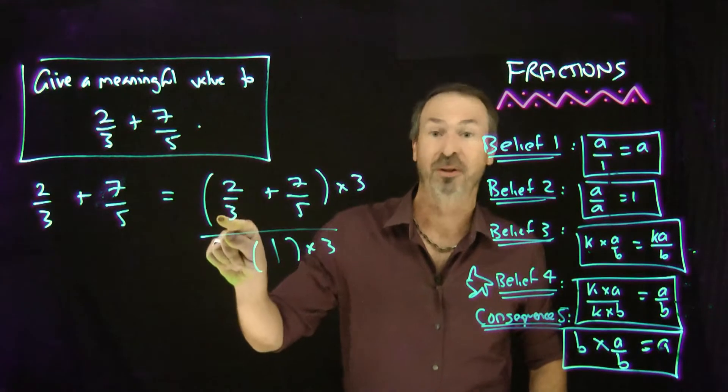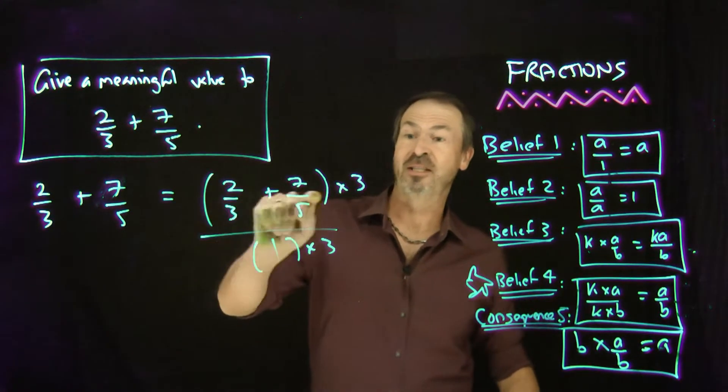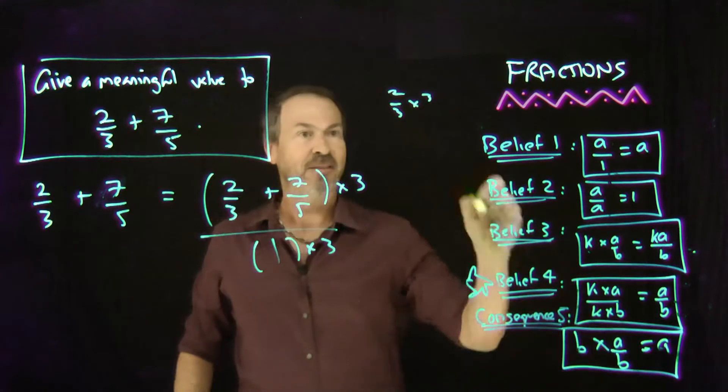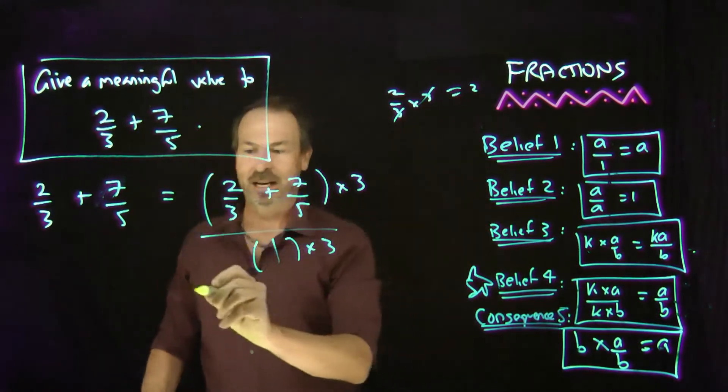And that means I have to multiply the bottom by 3. I'll do 3 for the moment because I want to just handle the thirds. Now I have 2/3 times 3. 2/3 times 3, I can see from this rule, would just be 2. So I can do this.